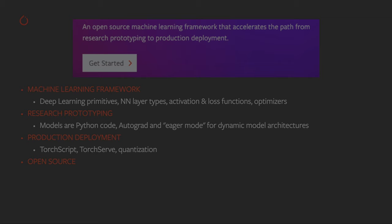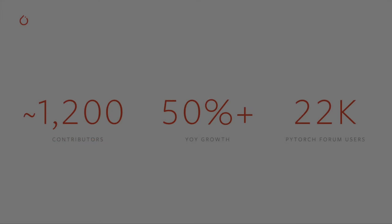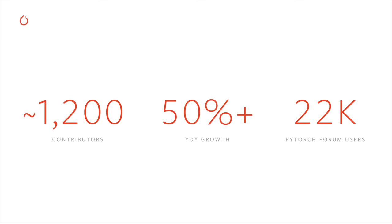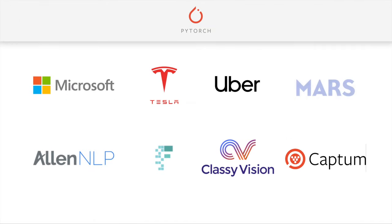PyTorch is free and open source software, free to use and open to contributions from the community. Its open source nature fosters a rich ecosystem of community projects, supporting use cases from stochastic processes to graph-based neural networks. The PyTorch community is large and growing, with over 1,200 contributors from around the world and over 50% year-on-year growth in research paper citations. PyTorch is in use at top tier companies and provides the foundations for projects like Allen NLP, Fast AI, ClassiVision, and CAPTA.